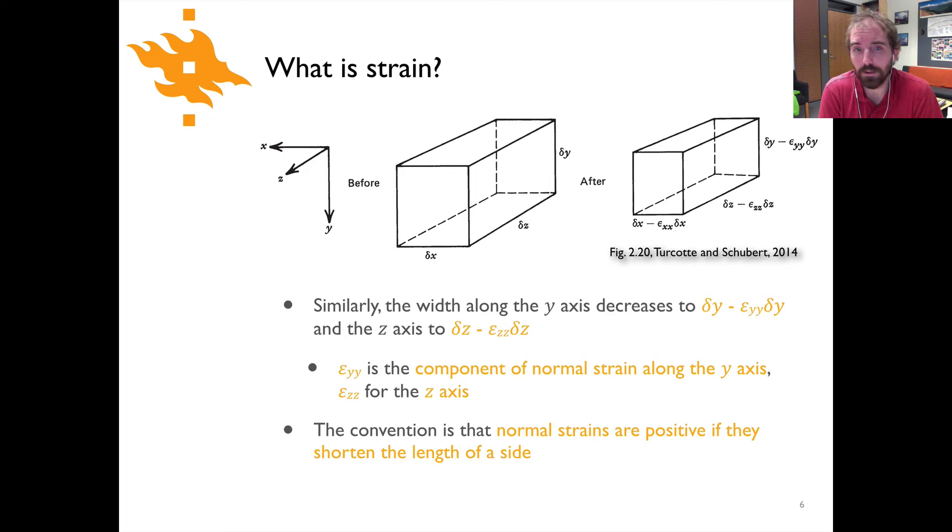So similar to the x-axis we can do exactly the same thing along the y-axis or z-axis. We look at the y-axis here we see that the length of our material along the y-axis has been reduced and it decreases from dy to dy minus epsilon yy times dy and the same applies to the z-axis. So along the y-axis we can call epsilon yy the component of normal strain along that axis and the same would apply then for the z-axis with epsilon zz being the component of normal strain along the z-axis. The convention that is used is that the normal strains are positive if they shorten the length of one of the sides of the cube or whatever the material is you're considering.